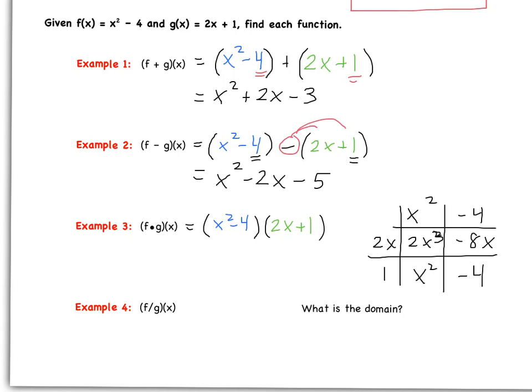So we don't have any like terms here. We could go ahead and just write it in standard form. Remember, highest degree to lowest degree. So our final answer here, 2x³ + x² - 8x - 4.